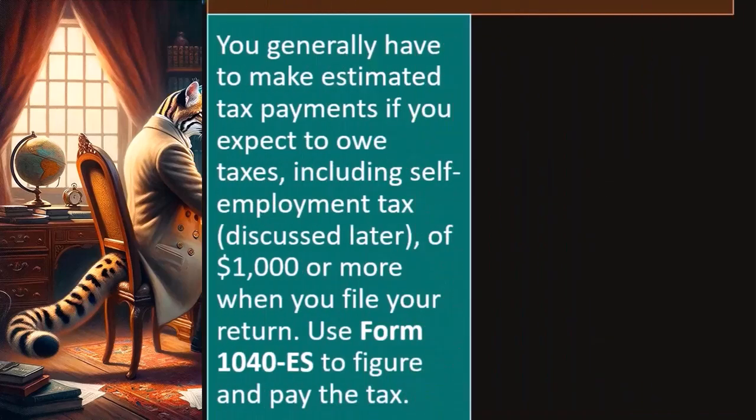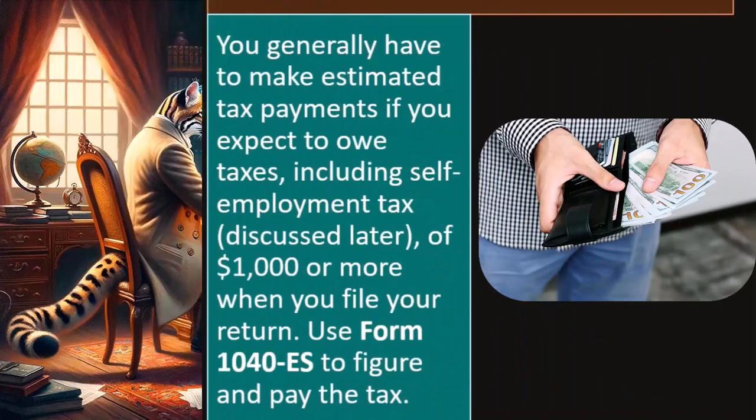You generally have to make estimated tax payments if you expect to owe taxes, including self-employment tax — Social Security and Medicare — of $1,000 or more when you file your return. What if you don't? They hit you with the sticks, metaphorically — the interest and penalties. We're trying to avoid the sticks.